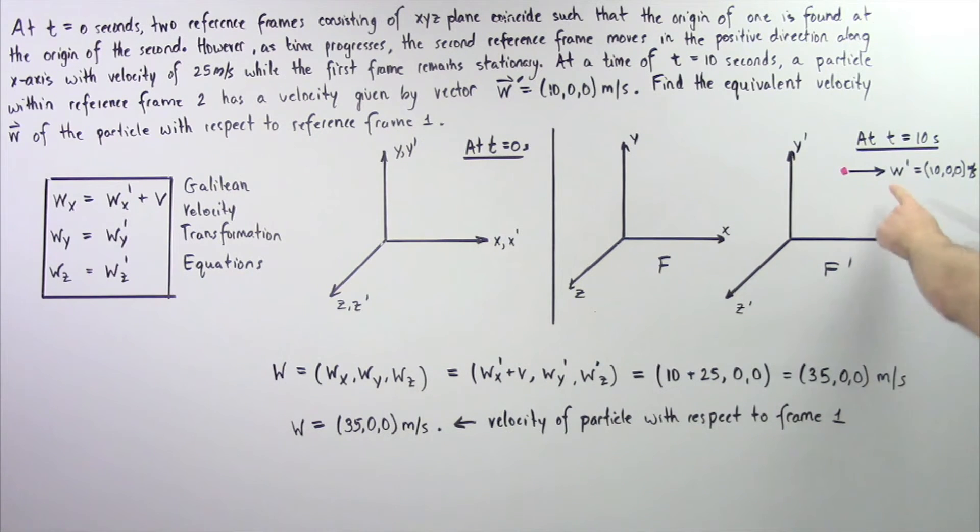there is an object, a particle as shown by this red point that has a velocity within this reference frame f prime that has w prime is equal to 10, 10, 10 meters per second.